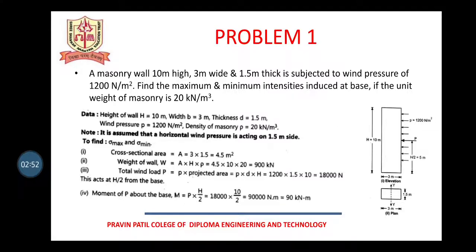So, the problem gives wind direction, that is the height of the wall, width and thickness, wind pressure and masonry density. Now the first step is to calculate cross sectional area, this area is 3 multiplied by 1.5, because we know that rectangle area is b into d, so I have b into d, that is 4.5 meters square.